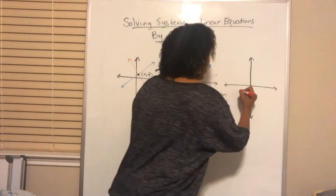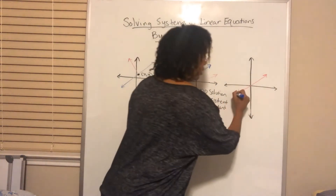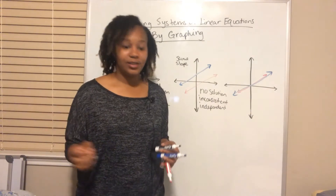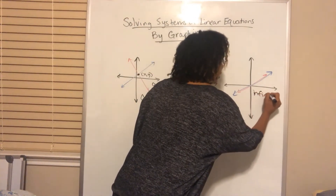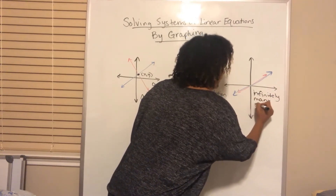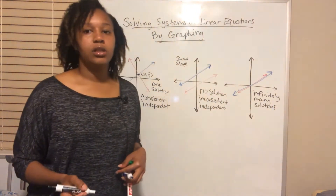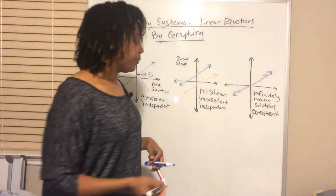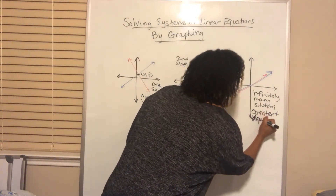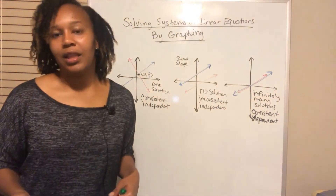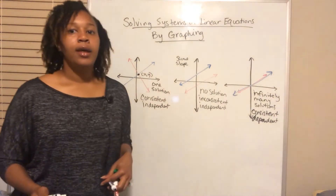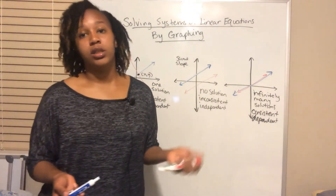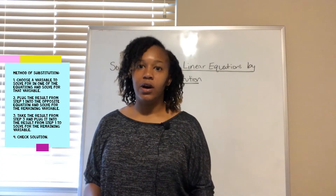The third scenario is you can graph two lines and they can actually be the exact same line, meaning they lie on top of each other. In that case, every point on the lines is a solution, so there are infinitely many solutions. This is called a consistent dependent system — consistent because there is a solution, dependent because the lines are dependent upon each other, being the same exact line. So you can have one solution, no solution, or infinitely many solutions.